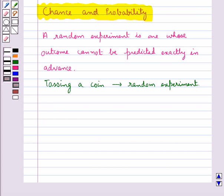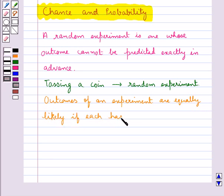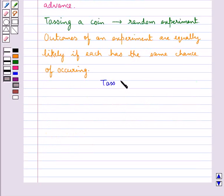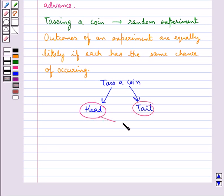Next we discuss equally likely outcomes. The outcomes of an experiment are equally likely if each has the same chance of occurring. When we toss a coin, we either get a head or a tail. Both these outcomes, head or tail, are equally likely outcomes.